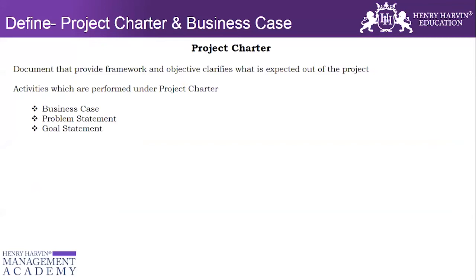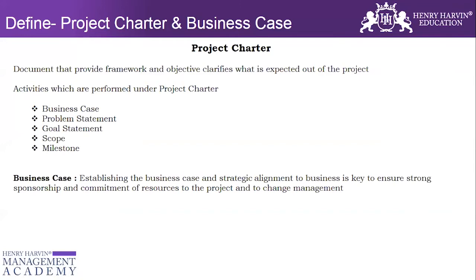The third thing which comes into consideration is called the goal statement. Then there is a scope — we'll talk about what scope is. Then there is a project milestone. So these are the five important things that are part of the project.